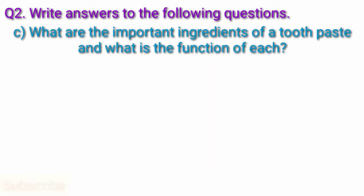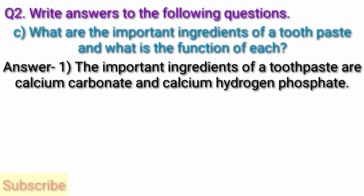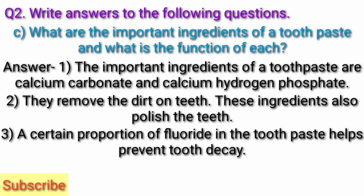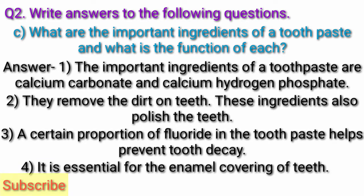Question C: What are the important ingredients of a toothpaste and what is the function of each? Answer: The important ingredients of a toothpaste are calcium carbonate and calcium hydrogen phosphate. They remove the dirt on teeth and also polish the teeth. A certain proportion of fluoride in the toothpaste helps prevent tooth decay. It is essential for the enamel covering of teeth.